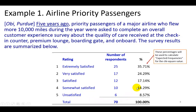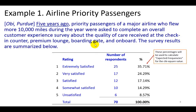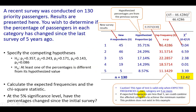These percentages are going to be our benchmark going forward. Because in a recent subsequent survey, 130 priority passengers were again surveyed and we see their results here. We want to find whether there has been a change between how they responded the first time and how they now have responded.